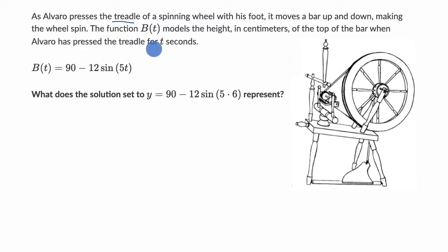Alvaro has pressed the treadle for t seconds. They give us b(t) right over here: 90 minus 12 times sine of 5t. The first question is, what does the solution set to y equals 90 minus 12 times sine of 5 times 6 represent? Pause this video and see if you can think about that.